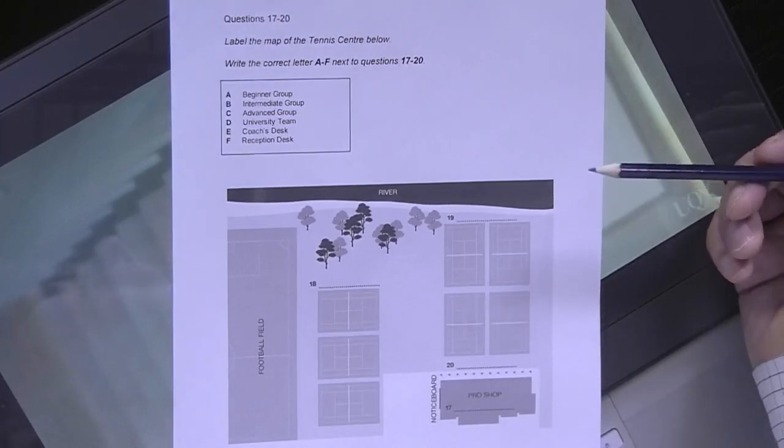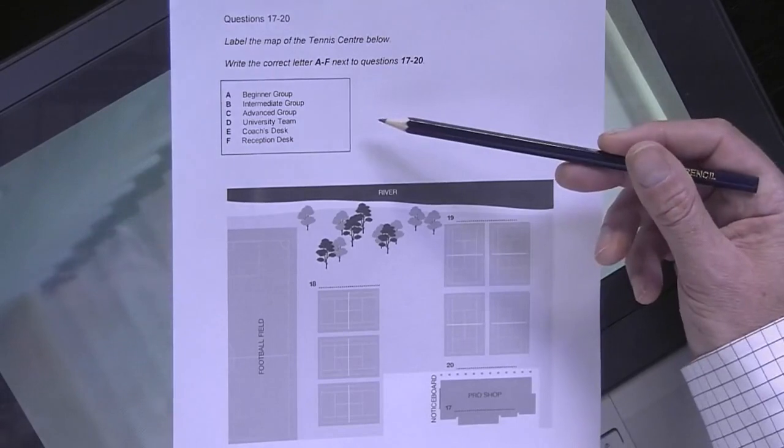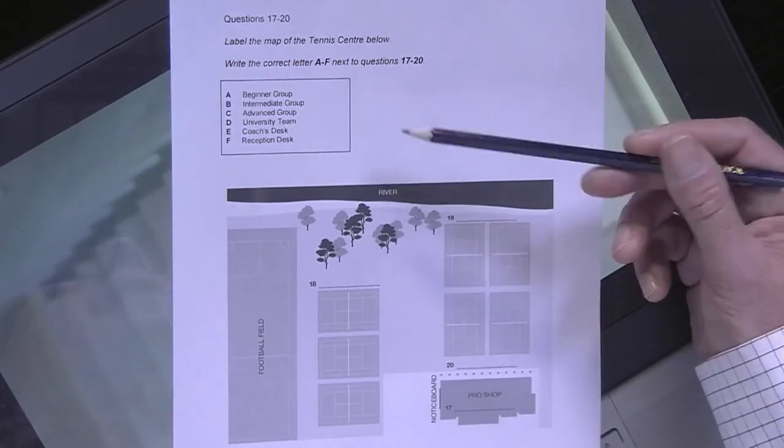Then, choose the label from the list which will fit each gap. The most important aspect of this is to use all the information you're already given on the diagram or map to help you follow the listening. If you can follow the speaker, you're more likely to hear the answers. Here's a summary of this procedure.